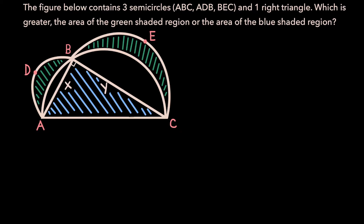To begin, let's start by finding the area of the green shaded region. The way we're going to do this is first by finding the area of the entire figure — that is, the area of the right triangle plus the area of semicircle ADB plus the area of semicircle BEC. And from that total area, we're going to subtract the area of semicircle ABC. And notice that if we do that, what we're left with is the green shaded region.